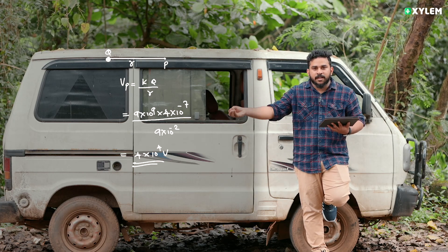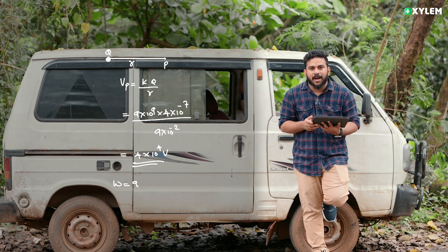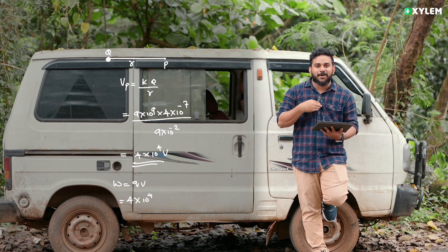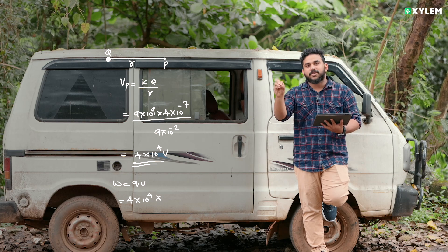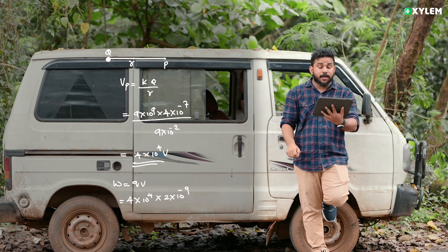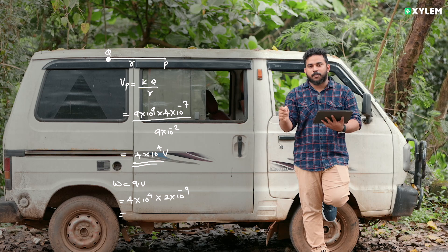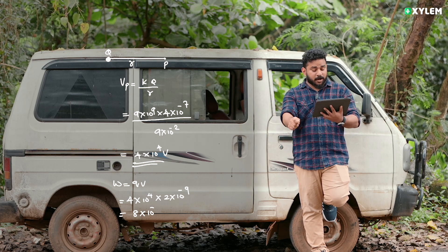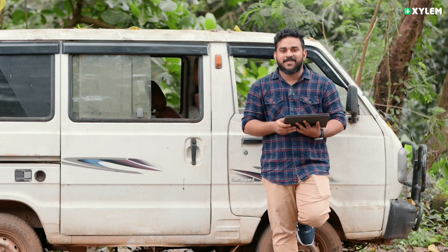Now, for the charge particle at that point, the work done is W = Q into V. The potential V is 4×10⁴ volts, and the charge Q is 2×10⁻⁹ Coulomb. So the work done is 2×10⁻⁹ into 4×10⁴, which gives the answer 8×10⁻⁵ Joules. See you all!